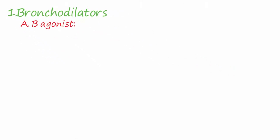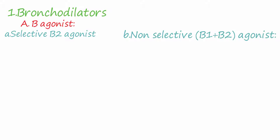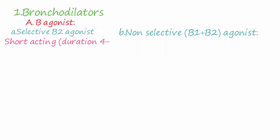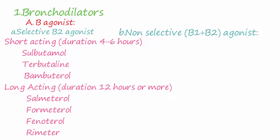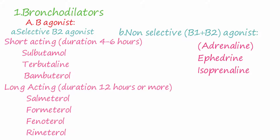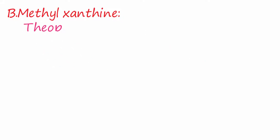Bronchodilators include beta agonists — selective beta-2 agonists and non-selective beta-1 plus beta-2 agonists. Selective beta-2 agonists include short-acting drugs with duration four to six hours: salbutamol, terbutaline, and bambuterol. Long-acting drugs with duration of action 12 hours or more include salmeterol, formoterol, fenoterol, and reproterol.